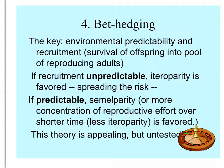Let's look at bet hedging. Many organisms hold back maximal reproduction, hedging their bets that things might be better in the future. This relates to environmental predictability and the survival of offspring into the pool of reproducing adults — what we call recruitment. If recruitment is unpredictable and risky, iteroparity is favored because it spreads the risk — an organism won't put everything into reproduction in what may be a bad year. If the environment is very predictable, semelparity or greater reproduction over a shorter time is favored.